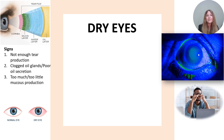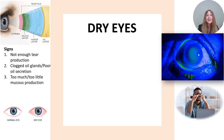Our tear film is meant to stay in place for about 10 seconds, and after 10 seconds those tears will start to break up. That's when we automatically blink like a windshield, and this helps to reestablish those beautiful three layers and maintain clear and comfortable vision. Dry eyes occur when one or all of these layers are disrupted and the ocular surface is no longer nourished the way it's supposed to be.